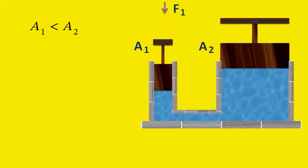In the schematic diagram of a hydraulic press, the cross-sectional area of the smaller piston is A1, and the cross-sectional area of the larger piston is A2. Therefore, A1 is less than A2. If the input force F1 is applied on the smaller piston, the larger piston will experience a force F2.